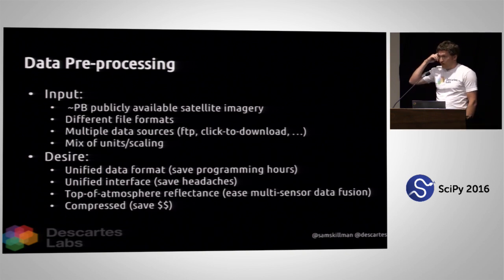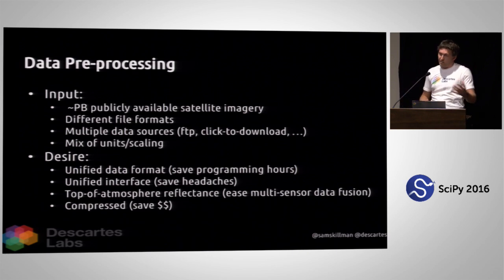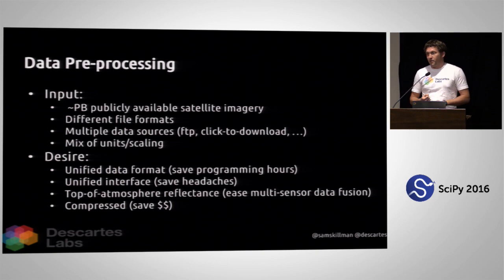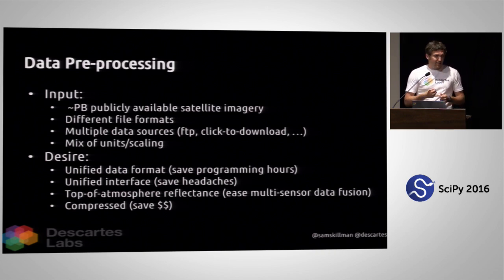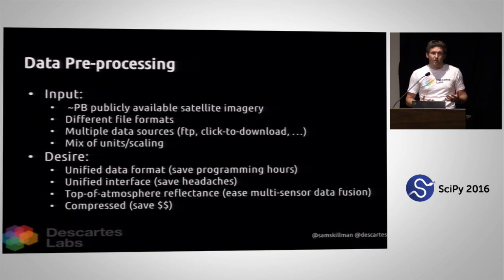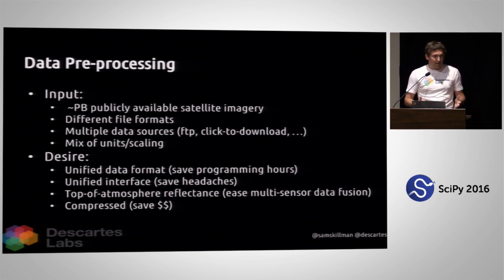Using that cloud infrastructure, we have about a petabyte or more of satellite imagery in all sorts of different formats, multiple data sources, FTP servers, click-to-download interfaces, all sorts of different units and scaling. What we really want is a nice clean unified data format — that saves programming hours so users don't have to think about data formats. You want a unified interface to save headaches from different web APIs. You want calibrated data like top-of-atmosphere reflectance to enable multi-sensor fusion. And as an economical point, you want good compression to save money.